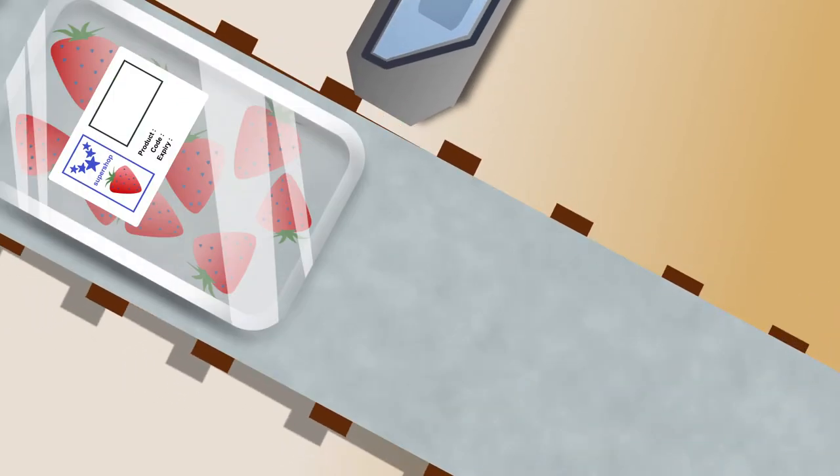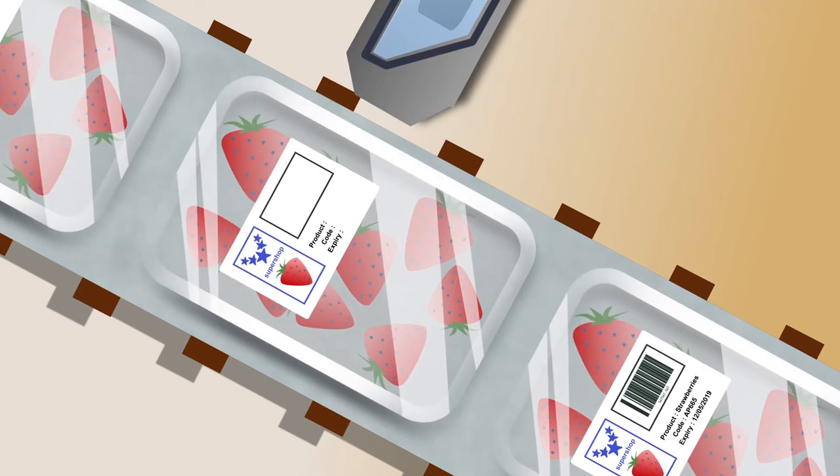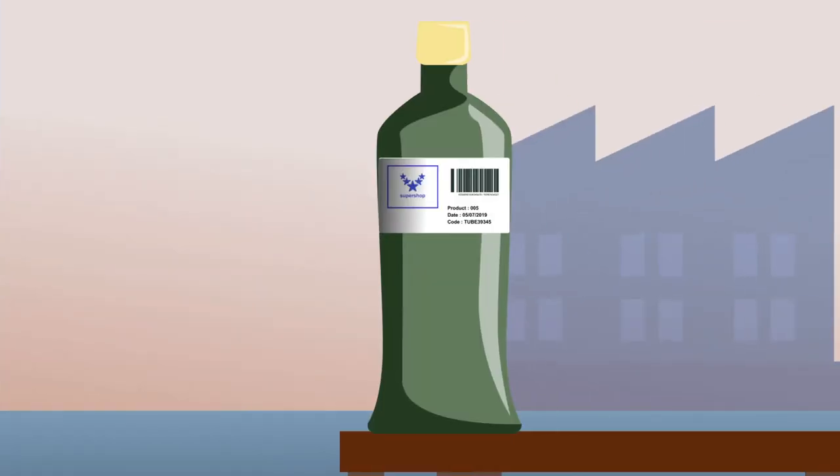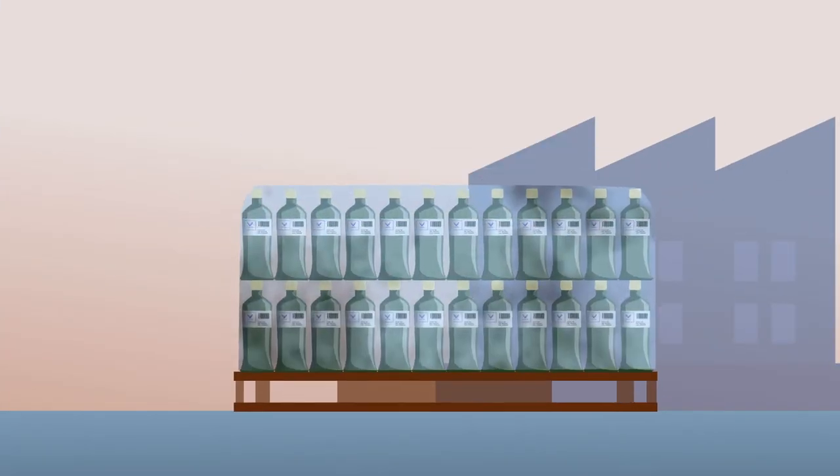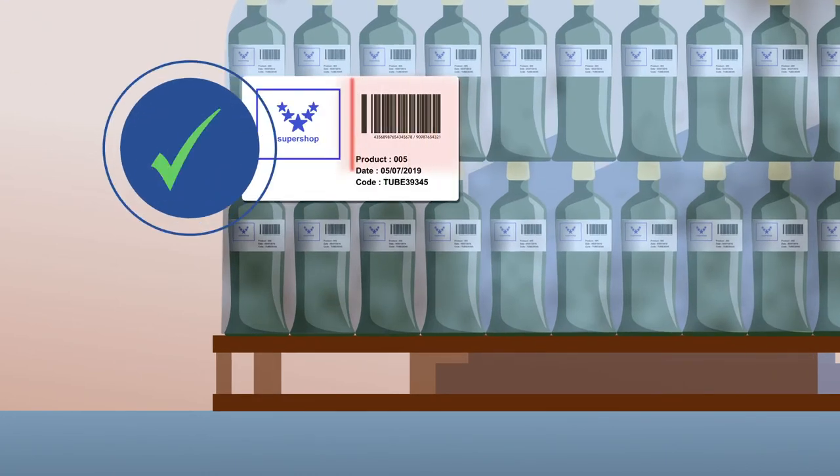However, by far the most popular industry is the labeling of food and drinks for sale through all supermarkets. Once the primary products have been labeled, then all parts of the secondary packaging and pallets are labeled again to assist in the supply chain process.